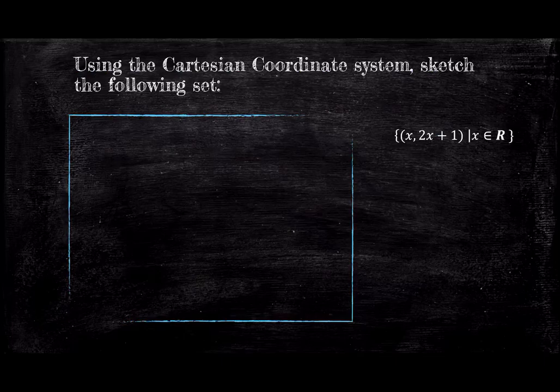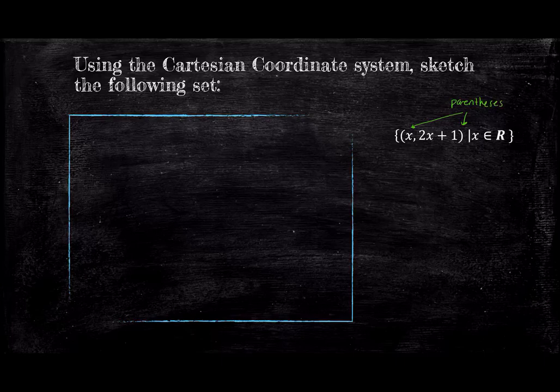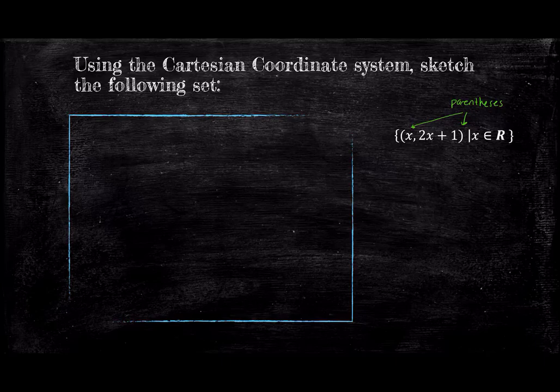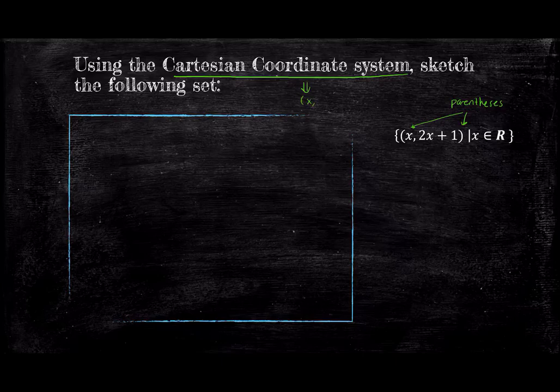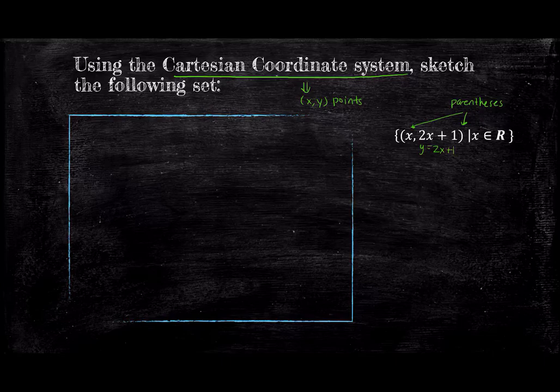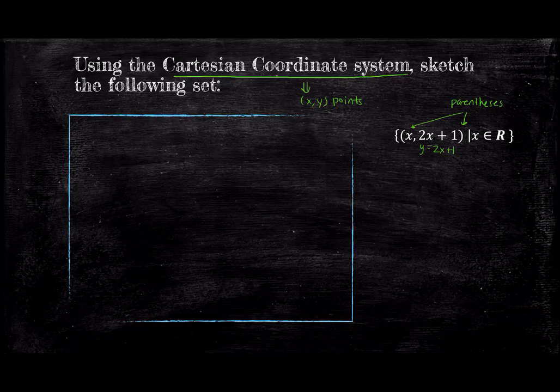Believe it or not, we can express sets that we usually visualize on a graph with this information. Let's look at this set. Notice that we added in parentheses before the bar. This gives us a formula for a set of points of the form parentheses x, 2x plus 1. While this may seem like an interval at first, consider the context of the problem. We were asked to use the Cartesian coordinate system to visualize, which is made up of x, y points. In this case, we see that the y slot is occupied by 2x plus 1. So in other words, y equals 2x plus 1. The set of all such points when graphed looks like a line y equals 2x plus 1.